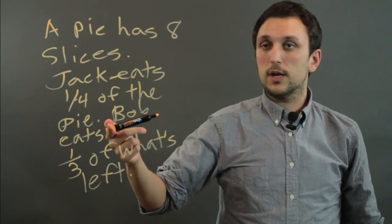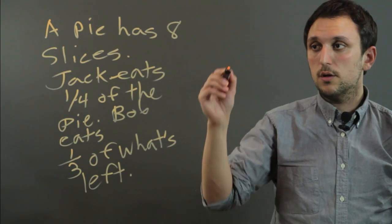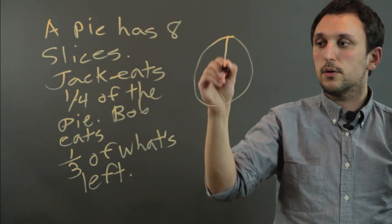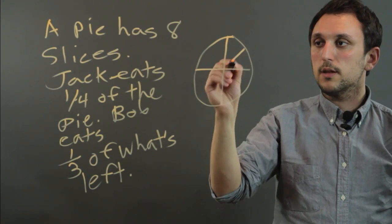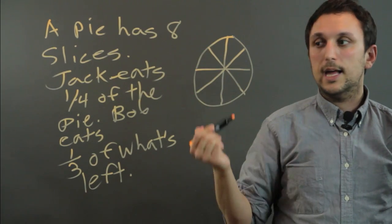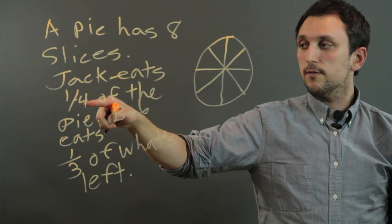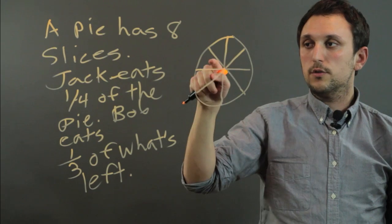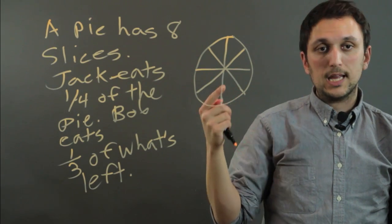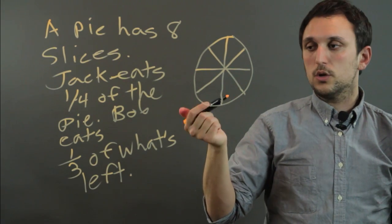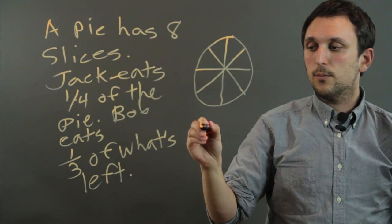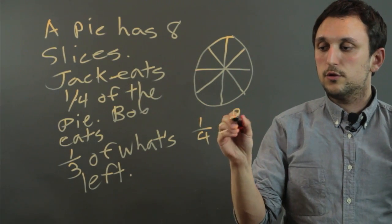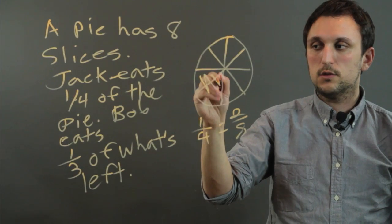What you can have the student do is draw the pie and say, OK, we had eight slices. And Jack is going to eat 1 fourth of them. So you go, OK, 1, 2, 3, 4, 5, 6, 7, 8. Well, there's eight slices, and 1 quarter of that would be like saying 1 fourth equals 2 eighths. So OK, Jack eats these two.